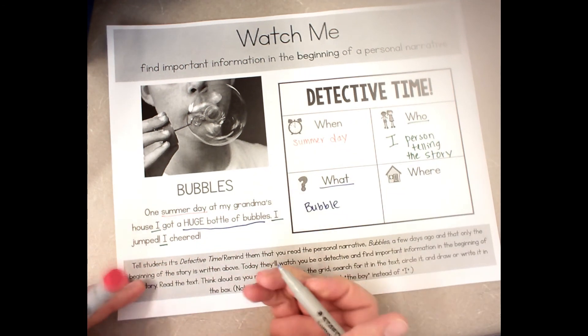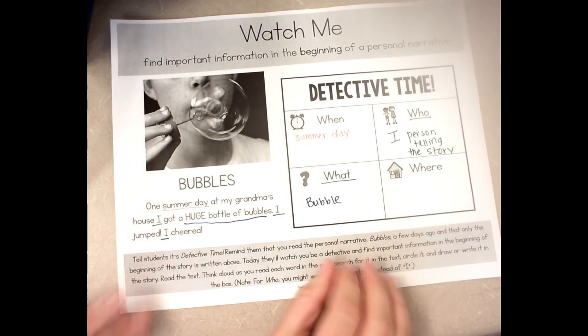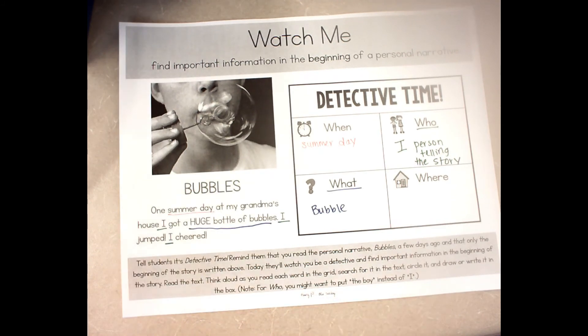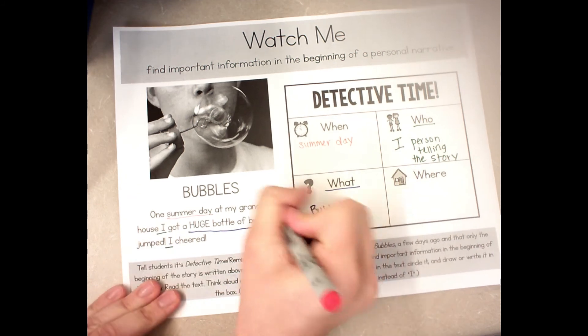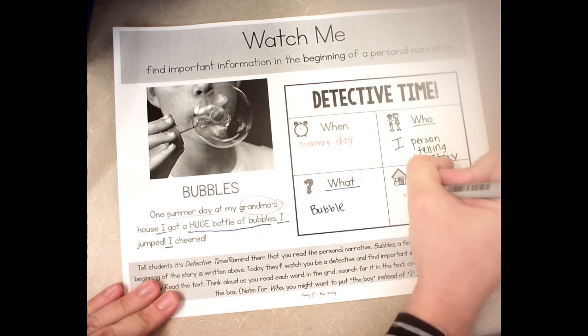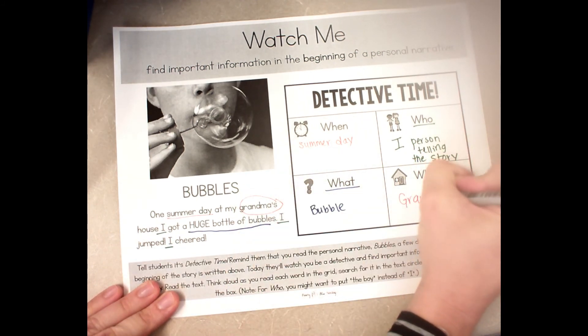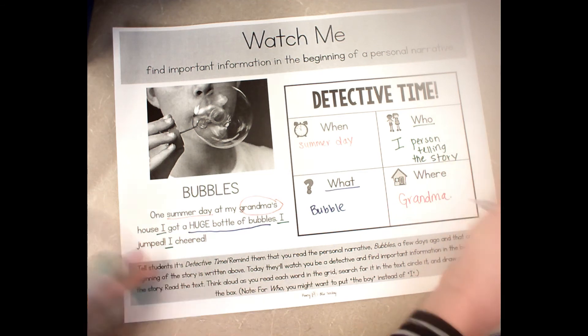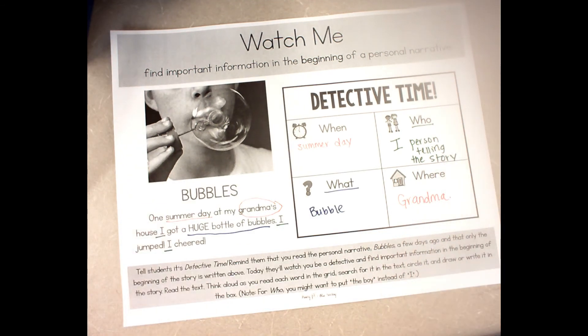Now the last one — where are they? You should have probably figured this out by now. Where are they at? That's right — grandma's house! So we write down 'grandma's.' Now you get to do the same in just a moment on a new sheet of paper, trying to be a detective for the story.